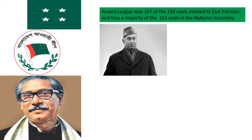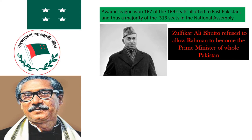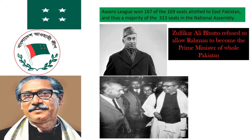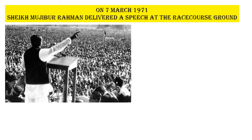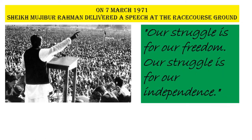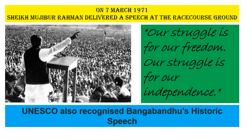However, Zulfikar Ali Bhutto, a former foreign minister and leader of the Pakistan People's Party, refused to allow Rahman to become the prime minister of the whole of Pakistan. On March 3rd, the two leaders met with President General Yahya Khan in Dhaka to decide the fate of the country, but it was unsuccessful, and Sheikh Mujibur Rahman called for a nationwide strike. On 7th March 1971, Sheikh Mujibur Rahman delivered a historic speech at the Racecourse Ground, mentioning four-point conditions for the national assembly meeting on 25th March. He closed his speech saying, 'Our struggle is for our freedom. Our struggle is for our independence.' This speech is considered by many the main event that inspired the nation to fight for its independence, and UNESCO also recognized Bangabandhu's historic speech.